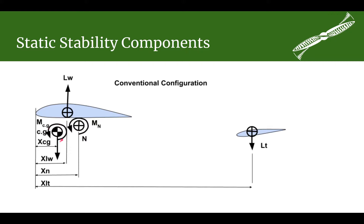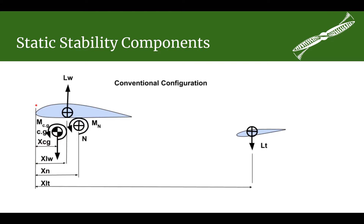You can also have a moment around the center of gravity. Each of these things has a position on the airplane measured from some reference point — that's going to be an X position. For example, X sub CG is the position of the center of gravity from some reference point. In this case, I chose the reference point as the leading edge of the wing, though typically you'd use something like the flange on the prop spinner or the nose of the airplane.